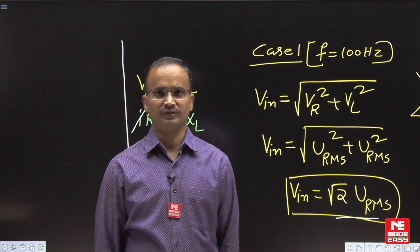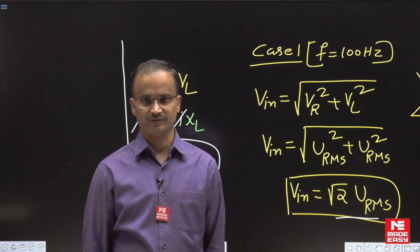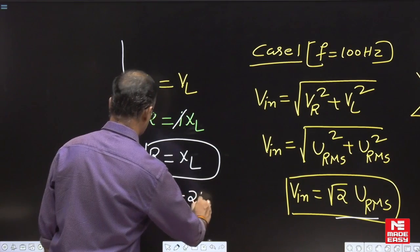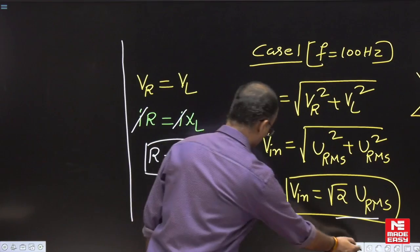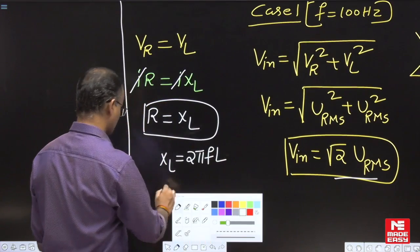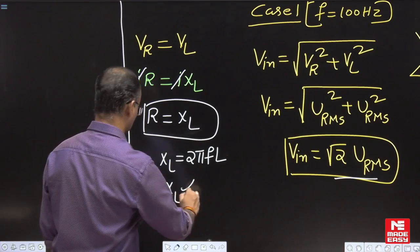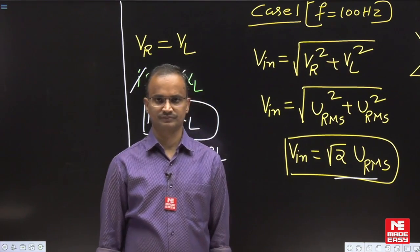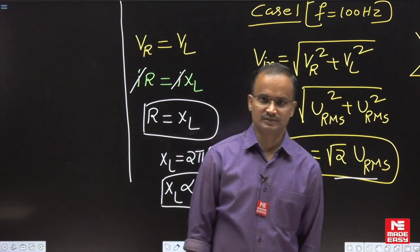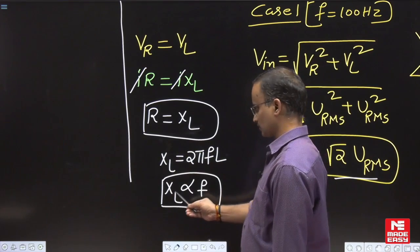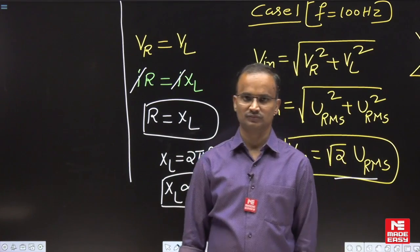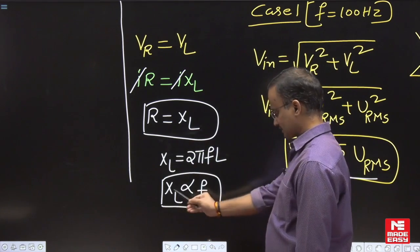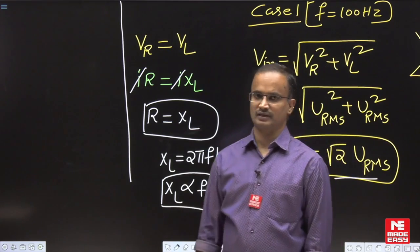In Case 2, we are modifying the source frequency. The formula for XL is 2πFL, so inductive reactance is directly proportional to frequency. Whenever the frequency changes from 100 to 50 Hz, the inductive reactance changes, but the resistance value remains the same.